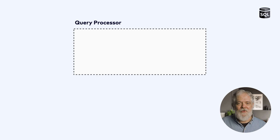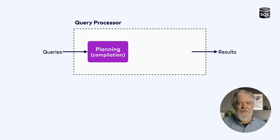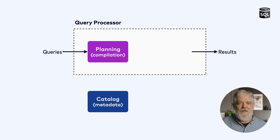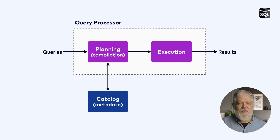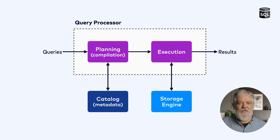The most important component in a database is the query processor, which receives queries and produces results. Query processing involves two key phases. First, a planning phase where the query is parsed and compiled into an execution plan. In order to create this execution plan, the query planner must have access to metadata about the tables, functions, and other database objects used by the query — this information lives in a catalog. And in the second phase of query processing, the plan is executed. This execution phase needs access to the storage used by the input and output tables used by the query. Handling this data storage is the responsibility of a storage engine.